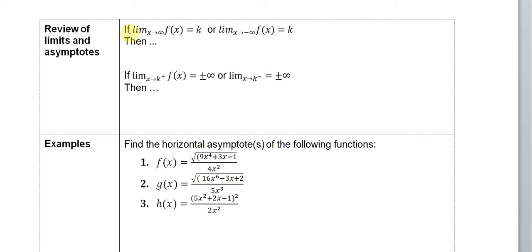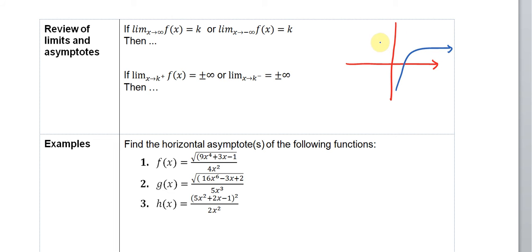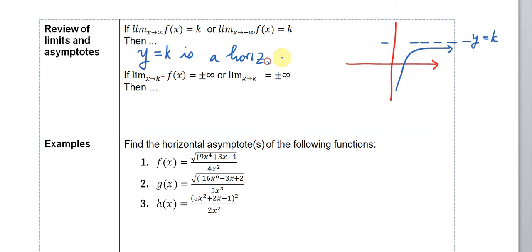If the limit as x approaches infinity of f(x) equals k, or the limit as x approaches negative infinity of f(x) equals k, let's see graphically what this means. Say you have an x-y coordinate plane and a function f(x) that looks something like this. In the long run, the value of the function in blue is getting closer and closer to the line y equals k. We can say that y equals k is a horizontal asymptote of f(x).